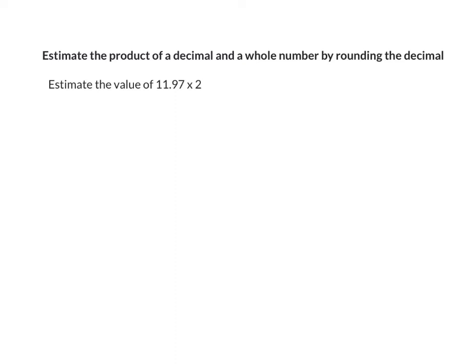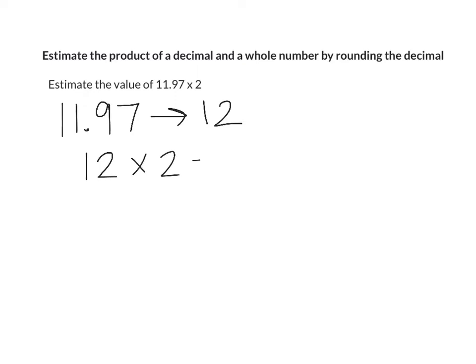For the next example, we're estimating the product — which means multiplication — of a decimal and a whole number by rounding the decimal. We're estimating 11 and 97 hundredths times 2. We don't need to do anything to 2 since it's already a whole number. 11 and 97 hundredths rounds to 12, so we multiply 12 times 2, which gives us an estimated product of 24.